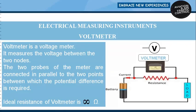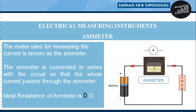Now we will discuss electrical measuring instruments. A voltmeter is an electronic measuring instrument which measures voltage between two nodes across a device. Its two probes are connected in parallel to the two points, and the ideal resistance of a voltmeter is infinite so no current passes through it. An ammeter measures current and is connected in series with the circuit so that the whole current passes through it. The ideal resistance of an ammeter is zero ohms, so there is no power loss and it reads the total current.